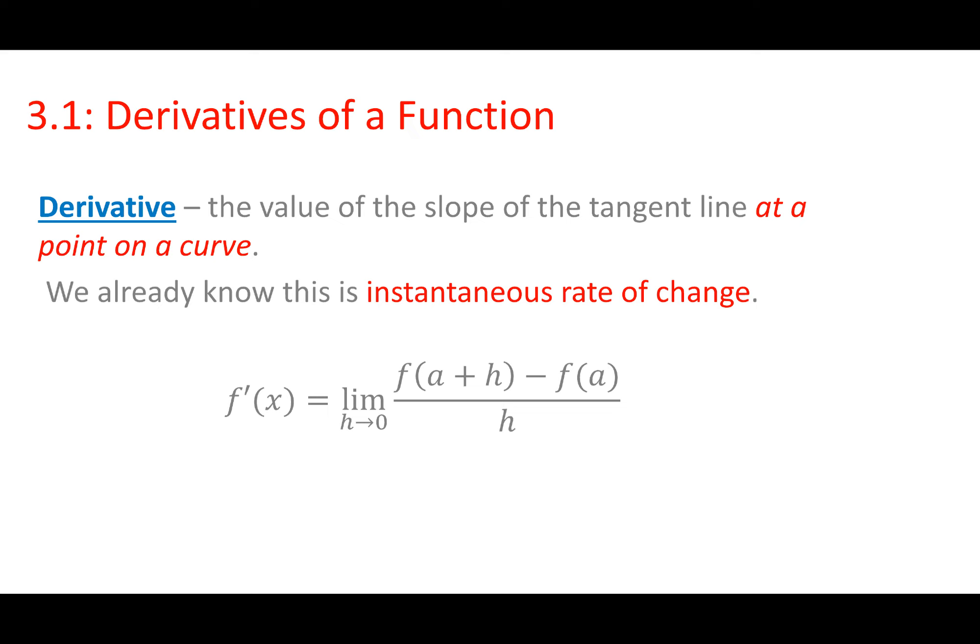We've seen this limit formula, but now I have F apostrophe of X — that means F prime of X. That is the derivative, and it will be the derivative function. So F prime of X will represent a derivative function, and we can find F prime of X from this limit formula. The limit as H approaches zero of F of A plus H minus F of A, all over H. All derivatives are is the slope.